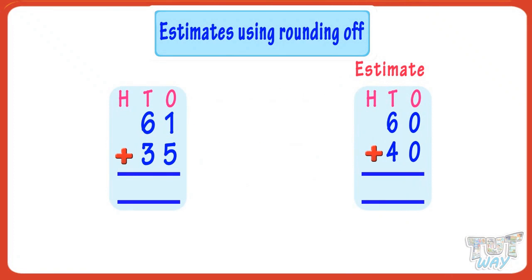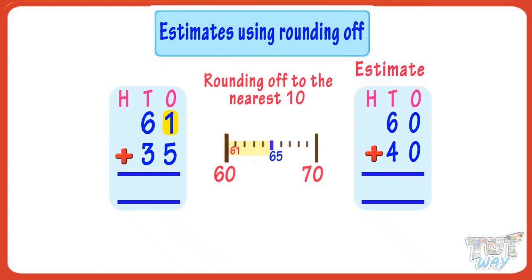For rounding off numbers to the nearest ten, we look at the ones digit. If it's less than five, we round the number down to the previous ten — that is 60 in this case. And if the ones place digit is five or more, we round the number up to the next ten — that is 70 in this case.